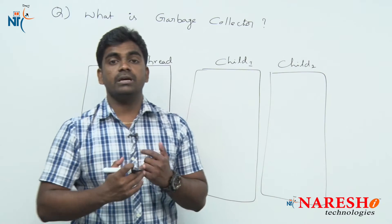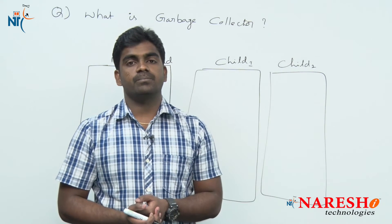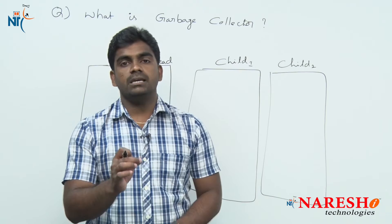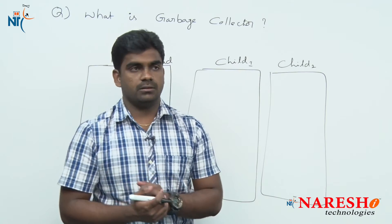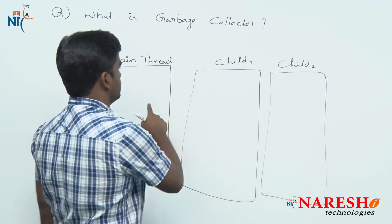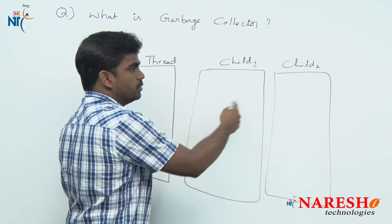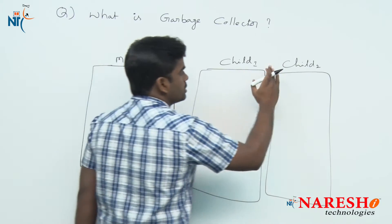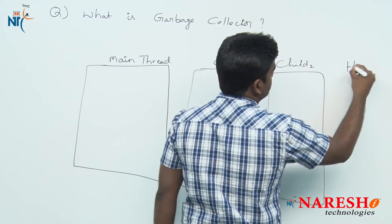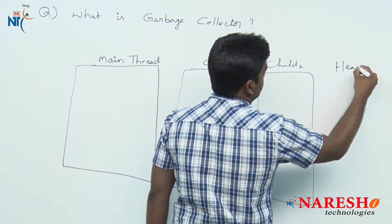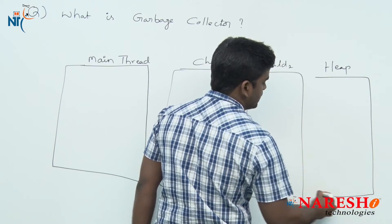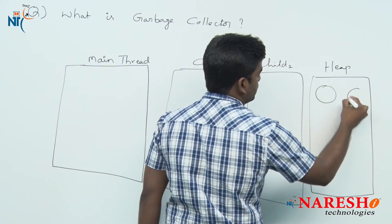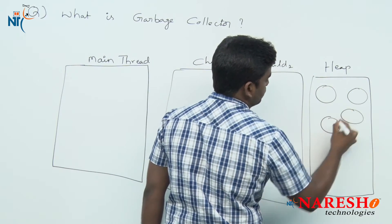Wherever you create objects — whether in the main thread, child 1, or child 2 — objects will be created inside the heap area. All objects are stored in heap memory only.